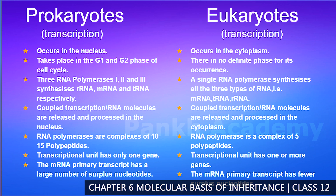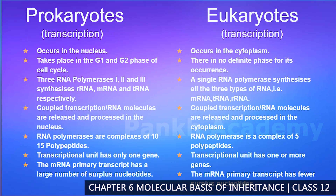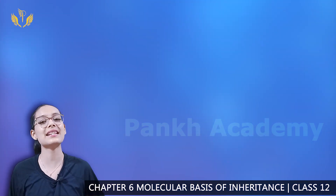In prokaryotes, RNA polymerase is a complex of five polypeptides; in eukaryotes, it is a complex of ten to fifteen polypeptides. In prokaryotes, the transcriptional unit is polycistronic (one hormone gene); in eukaryotes, it has only one gene (monocistronic). In prokaryotes, the primary transcript has fewer surplus nucleotides; in eukaryotes, there are many surplus nucleotides. Additionally, capping, tailing, and splicing occur in eukaryotes but not in prokaryotes.